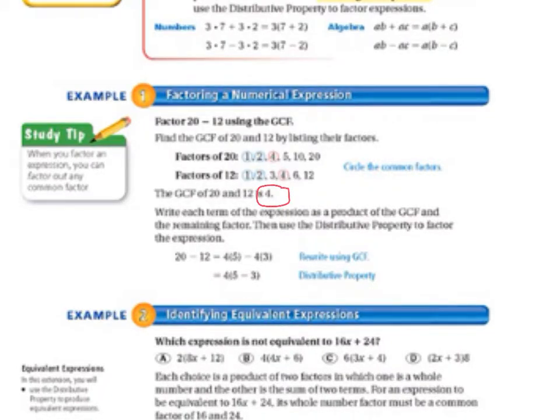Write each term of the expression as a product of the greatest common factor and the remaining factor. Then, use the distributive property to factor the expression. So, it looks like this.